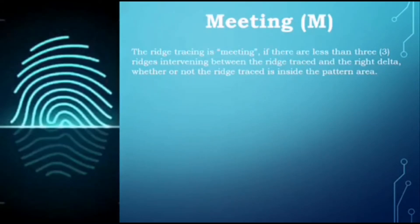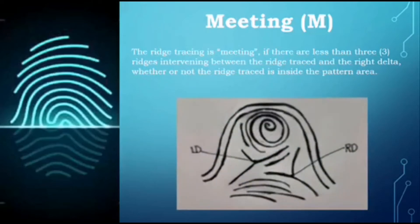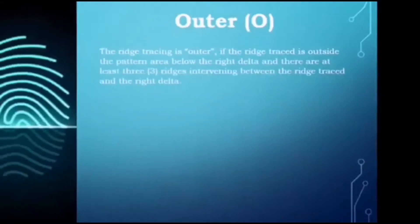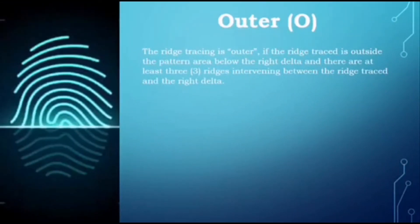Second is meeting. In meeting, there are less than three ridges intervening between the ridge trace and the right delta, whether or not the ridge trace is inside the pattern area. We begin with the left delta — this is the left delta and this is the tracing ridge. As seen in this illustration, the ridges that intervene between the tracing ridge and the right delta are less than three.